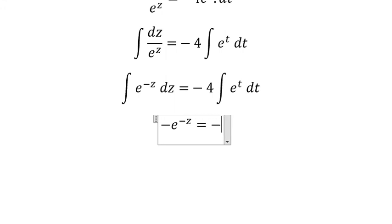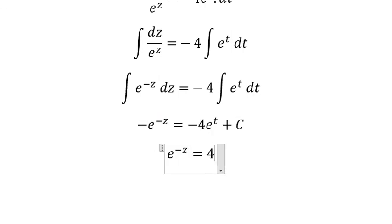On the right side, we have negative 4 times e to the power of t plus C. So we simplify the negatives. Negative times negative with the constant gives you a positive constant.